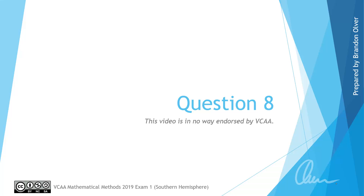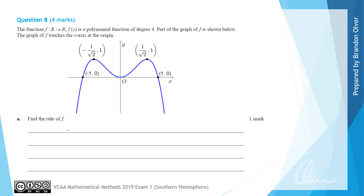Welcome to question 8 of the 2019 Mathematical Methods Exam 1 for the Southern Hemisphere. In this video we will be looking at the solution and examination advice for this question. A reminder that this video is in no way endorsed by VCAA. We are told that the function f with a domain of all real numbers is a polynomial function of degree 4. Part of the graph of f is shown below, and we know that the graph of f touches the x-axis at the origin, so that's a turning point at that point on the graph.